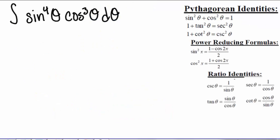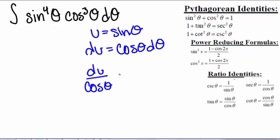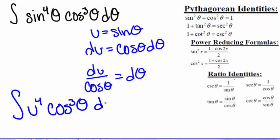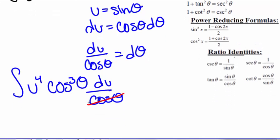Now, what happens if we have the integral of sine to the 4th of theta times cosine cubed of theta d theta? We can try the same approach and let u equal sine of theta. Then du equals cosine of theta d theta, giving us du over cosine of theta equals d theta. Our integral becomes u to the 4th times cosine cubed of theta times du over cosine of theta. One cosine cancels, leaving u to the 4th cosine squared of theta du — which seems like a problem because we still have both u and theta.